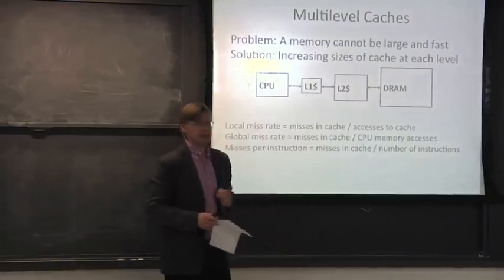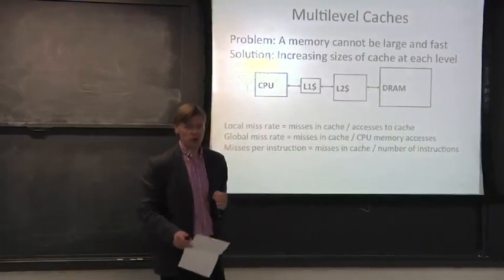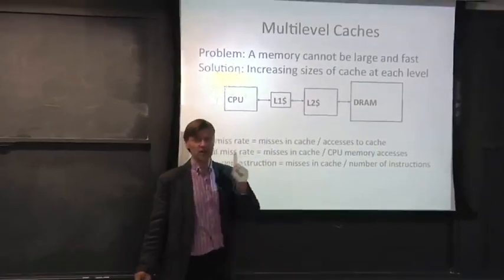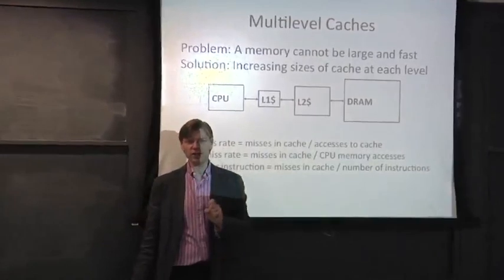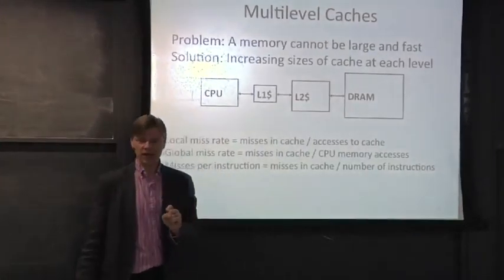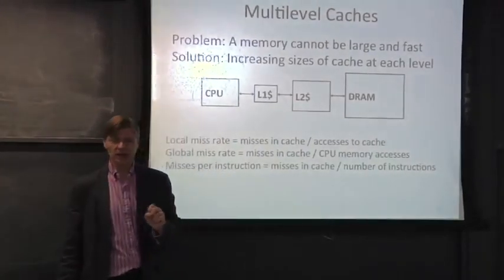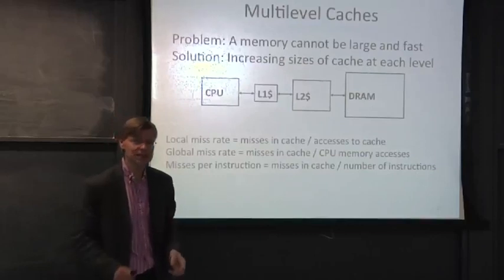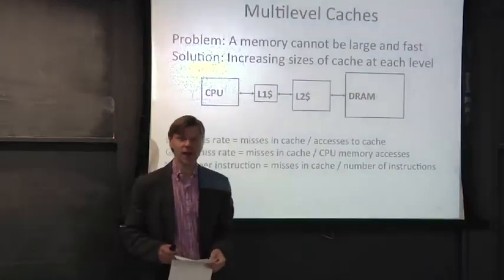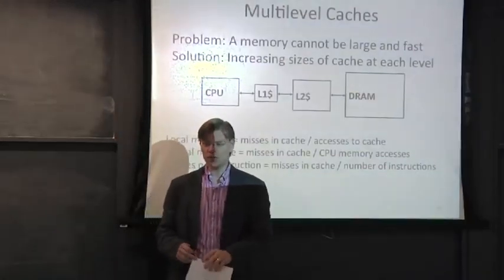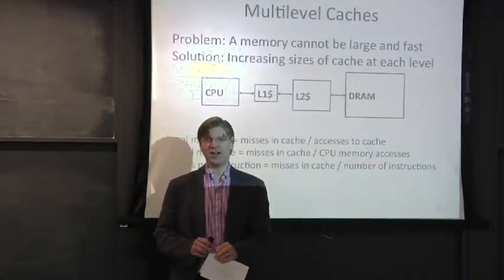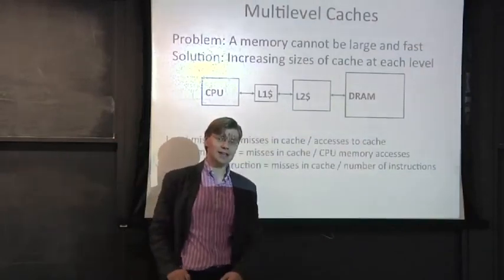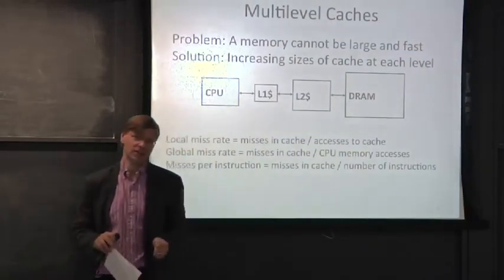The basic idea is: you have a CPU, and instead of just having one cache, you add two caches. The reason is that it is both difficult to have a very large cache and a very fast cache at the same time.